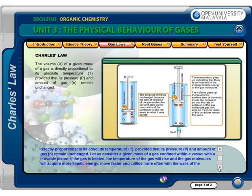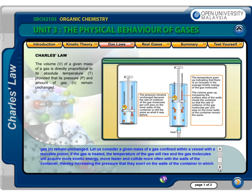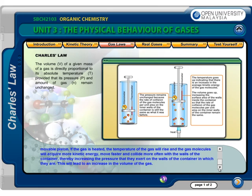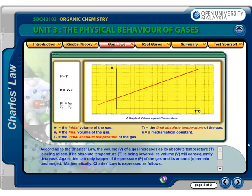Let us consider a given mass of a gas confined within a vessel with a movable piston. If the gas is heated, the temperature of the gas will rise and the gas molecules will acquire more kinetic energy, move faster, and collide more often with the walls of the container, thereby increasing the pressure that they exert on the walls. This will lead to an increase in the volume of the gas. According to Charles' Law, the volume V of a gas increases as its absolute temperature T is raised. If its absolute temperature T is lowered, its volume V will consequently decrease. This can only happen if the pressure P and amount N remain unchanged.